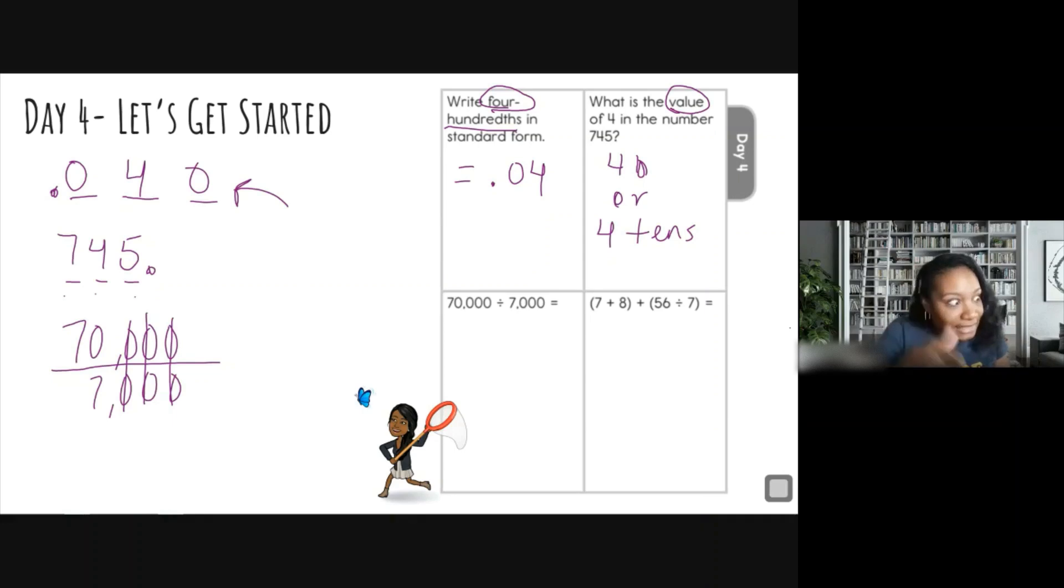I'm going to stop right there because now I see 70 and 7 by itself. Remember that that bar, that fraction bar, means to divide. So what is 70 divided by 7? So if you write it out like this it looks a little better, right? So 70 divided by 7 is how many times? You should have said 10, right. 10 times 7 is 70. So 7,000 goes into 70,000 ten times. That's it.